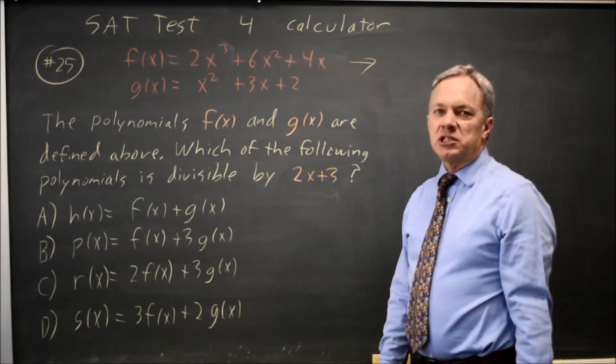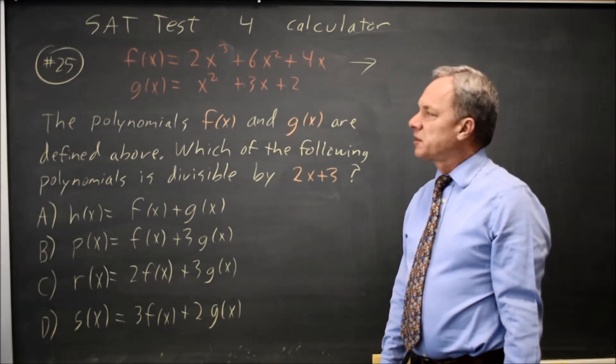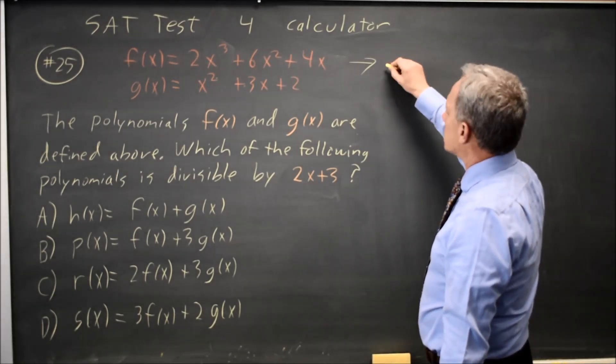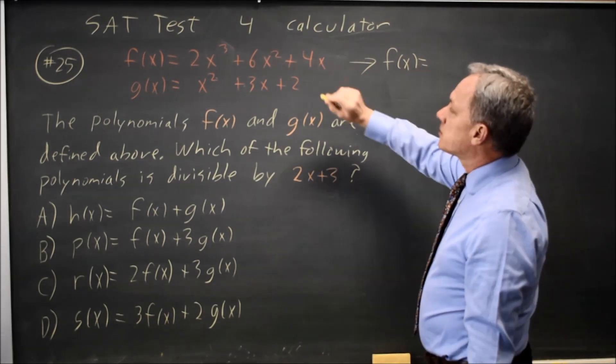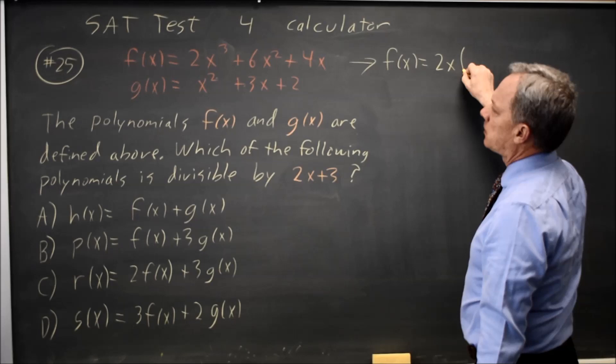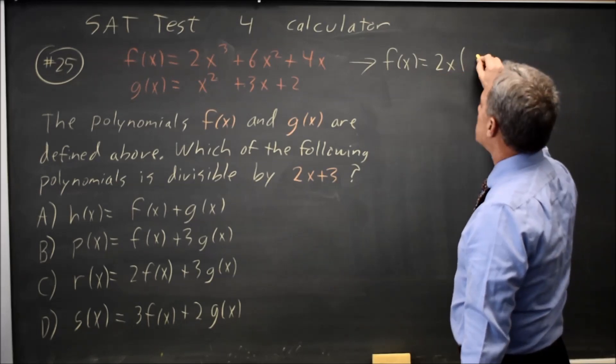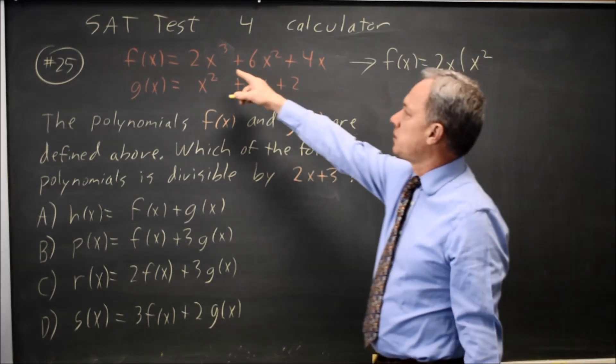This is much easier to do on the calculator, and I'll get to that in a moment, but first I want to rewrite f of x. Each of these has a common factor of 2x, so it's 2x times x squared is 2x cubed.